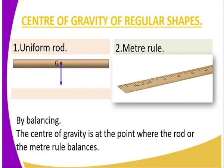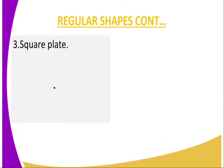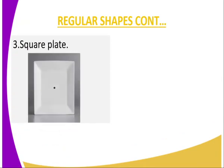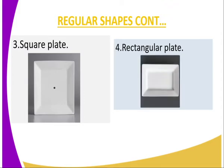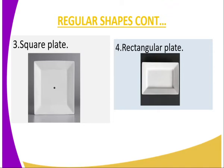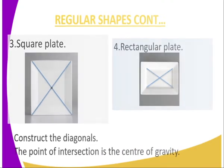For a square or rectangular plate, you find the center of gravity by constructing the diagonals. The point of intersection of the diagonals is the point of application of the resultant force, which is the COG.